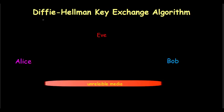Diffie-Hellman provides a way for them to agree upon a key. First, Alice and Bob agree upon two numbers P and G. P is a very large prime number and G is in some way related to that number. Alice generates these numbers and shares them through an unreliable medium. Bob receives them, and an attacker, Eve, who can access this unreliable medium, also gets access to P and G.